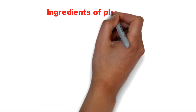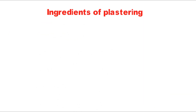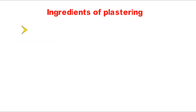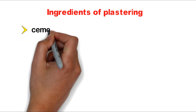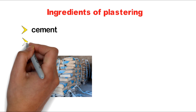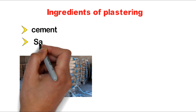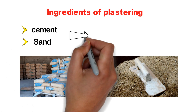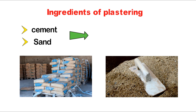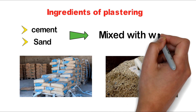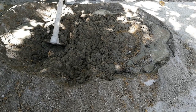What are the ingredients of plaster? The first one is cement, which is the main ingredient, and the other one is sand. These are the ingredients of conventional plastering. These ingredients are mixed with water and applied to the surface.